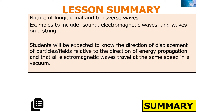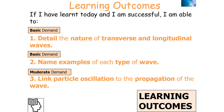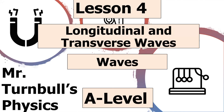To summarise today's lesson: we should understand the nature of longitudinal and transverse waves, with examples including sound, electromagnetic waves, and waves on a string. You should know the direction of displacement of particles and fields relative to the direction of energy propagation, and that all electromagnetic waves travel at the same speed in a vacuum. We should be able to detail the nature of transverse and longitudinal waves, name examples of each type, and link particle oscillation to wave propagation. Thank you very much for watching.